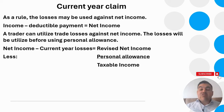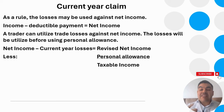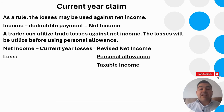Regarding current year claims: as a general rule, losses may be used against net income — that is income minus deductible payments. A trader can utilize trade losses against net income. The losses will be utilized before using the personal allowance. So net income minus current year loss gives you revised net income. Any remaining income can then use the personal allowance to arrive at taxable income. Each individual in the UK is entitled to a personal allowance of £12,570.